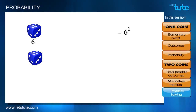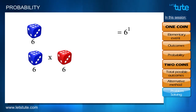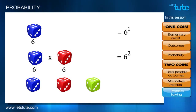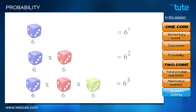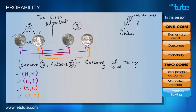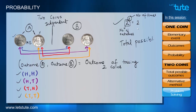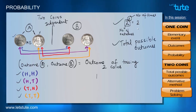For two dice, we multiply the outcomes from both. For three dice, it is 6 × 6 × 6 = 6 cubed. We must remember this method to calculate total possible outcomes faster.